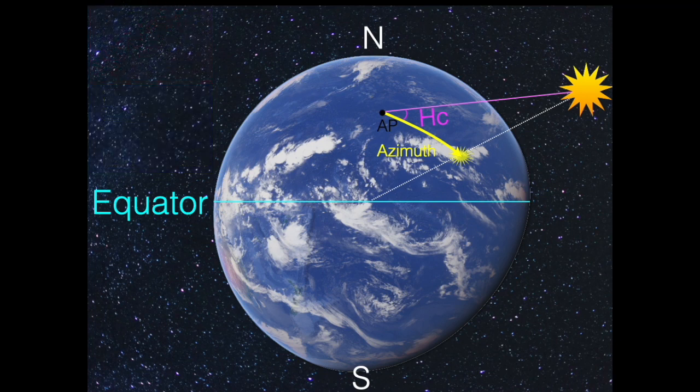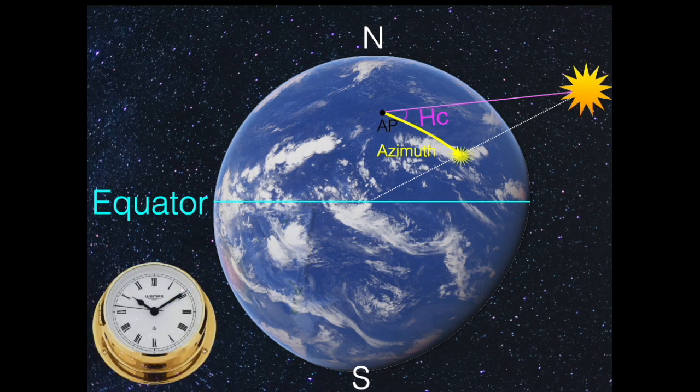Since the picture point of the star is moving very quickly on the surface of the earth because the earth turns, it's crucial to have an exact time on board.